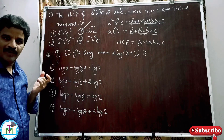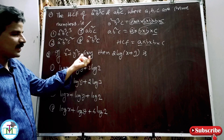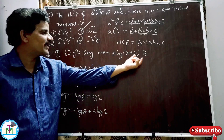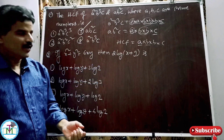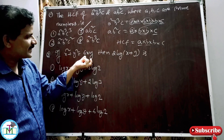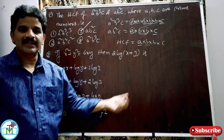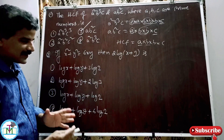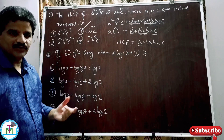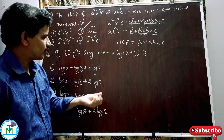Question number 2, based on logarithms: If x²+y²=6xy, then 2log(x+y) equals what? Here x²+y² = 6xy, and we need to find 2×log(x+y).